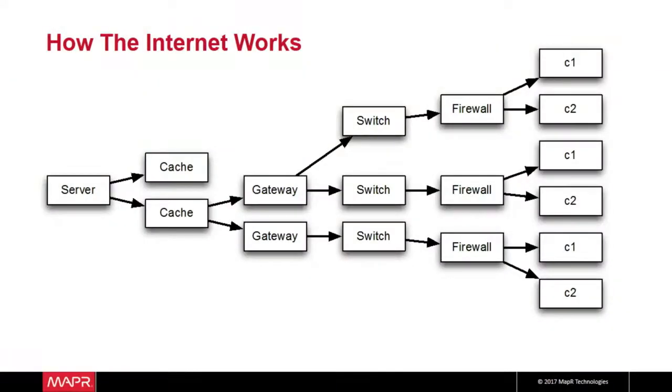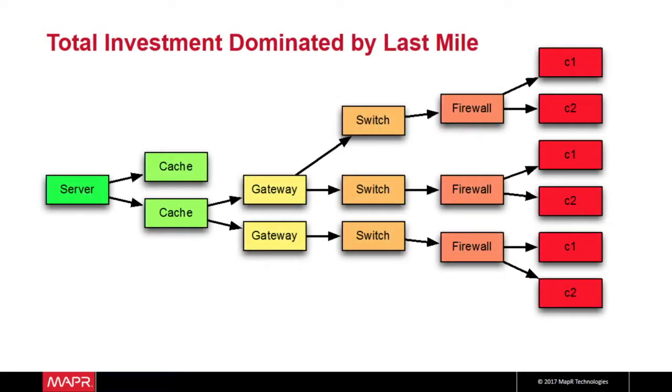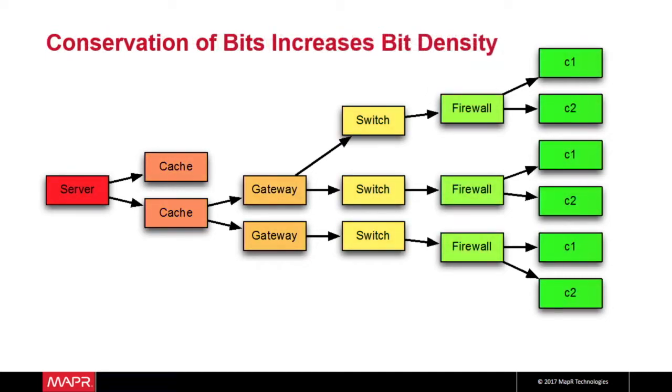The consumer internet: there are a small number of large servers on the left and a very large number of consumers on the right. Because of the inefficiency of connecting that last mile — all of those wires — the total amount of money is big on the consumer side. But because of the necessary concentration to build a few servers that drive all that consumed data, the dollar density is high on the left.